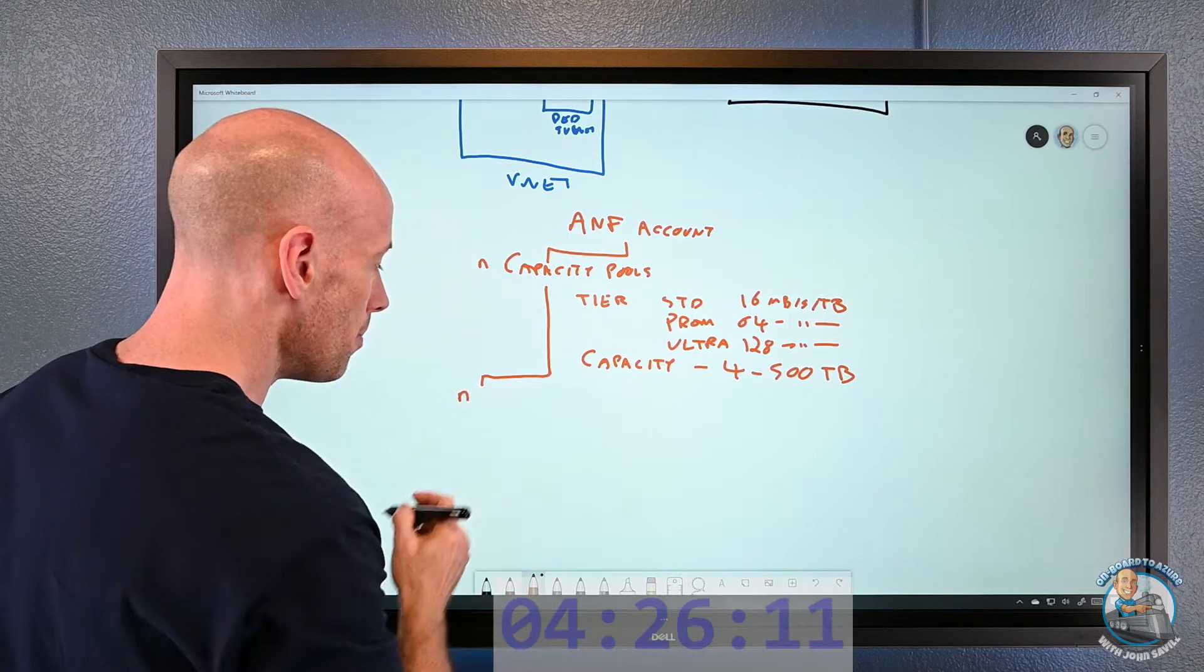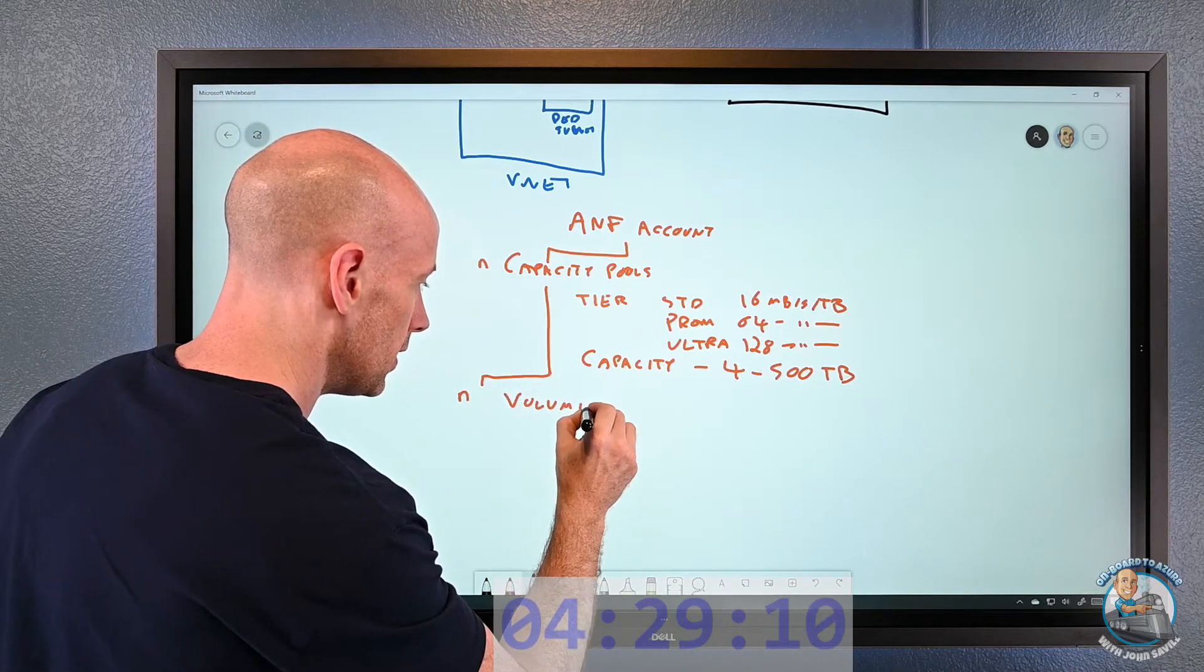Within my capacity pool, I can create n number of volumes coming out of this capacity pool. Then I have a volume and my volume has characteristics. It has a size, and the minimum size is 100 gigabytes going up to 100 terabytes. Then I'm going to have a protocol. So it's going to be NFS or SMB. I'm picking one of those things. So that's the hierarchy.